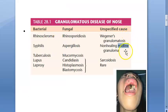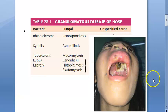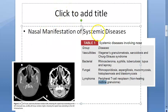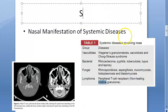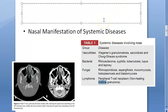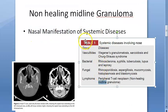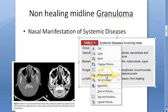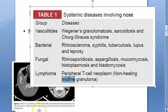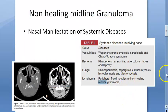Here is a photo of a patient, and after three months of initial presentation this is how it has become. Non-healing midline granuloma is a nasal manifestation of a systemic disease. Interestingly, it is also called a peripheral T-cell neoplasm — so we are now entering the territory of neoplasm.